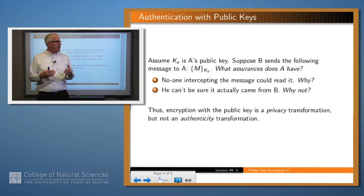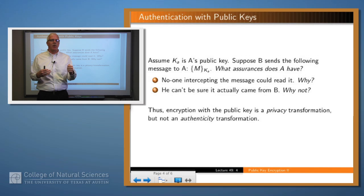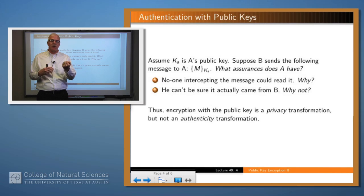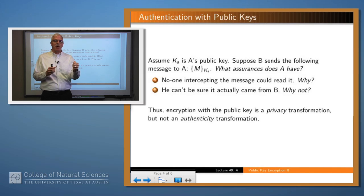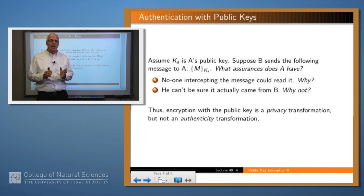Suppose that B sends a message to A encrypted with A's public key. B knows the message was delivered confidentially because only A has the key which will allow decryption of the message. On the other hand, A doesn't know for sure that the message came from B, because anyone might have A's public key. So we get privacy, but not authentication, when encrypting with A's public key.